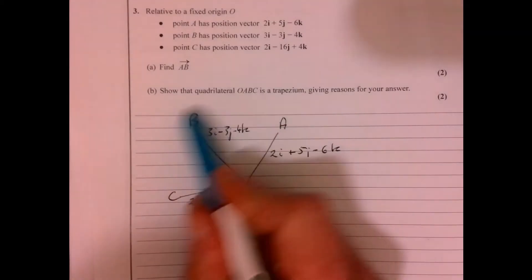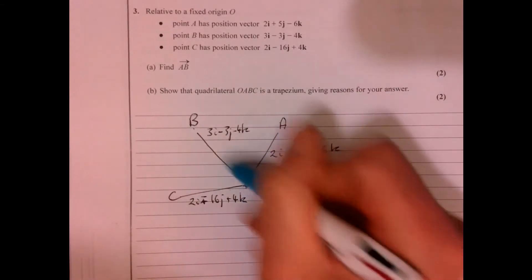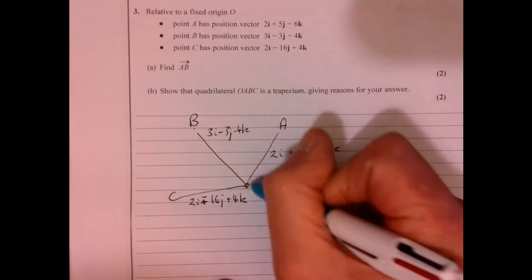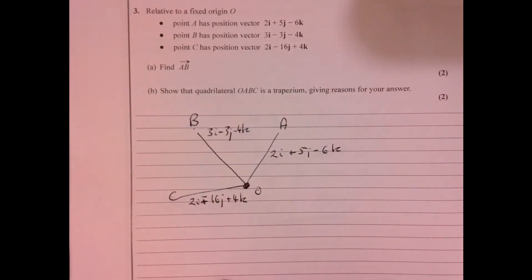Question three. The first thing I always do with these is draw myself a little diagram. I don't worry too much about where A, B, and C are in relation to the origin. I've just drawn those points in - it just helps me picture what's going on.